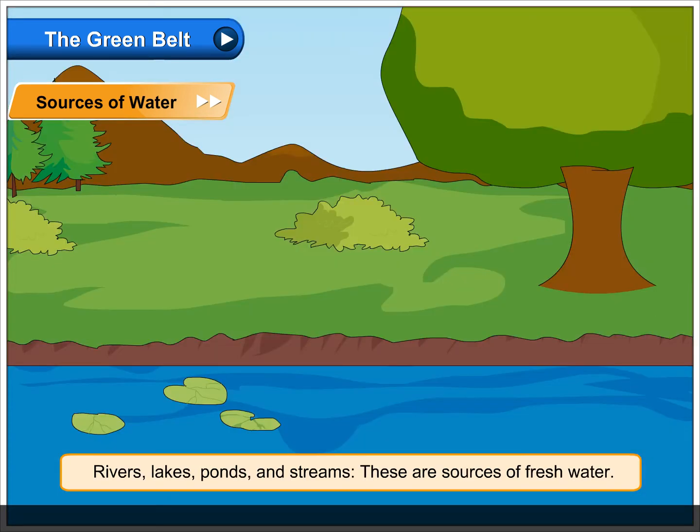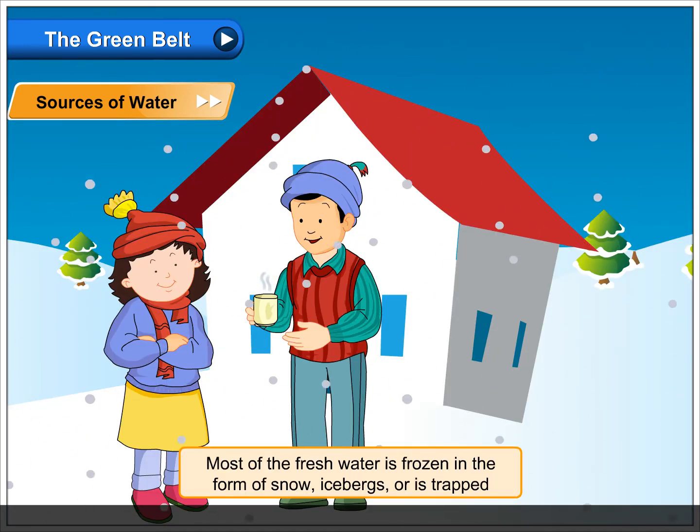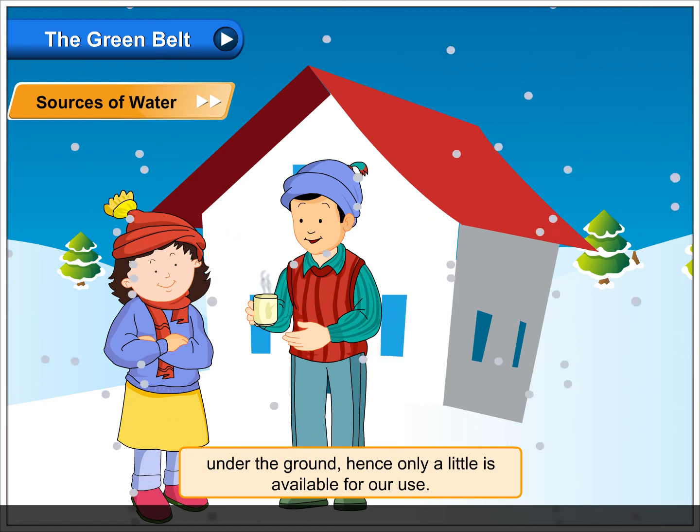Rivers, lakes, ponds and streams are sources of fresh water. Most of the fresh water is frozen in the form of snow, icebergs or is trapped under the ground. Hence, only a little is available for our use.